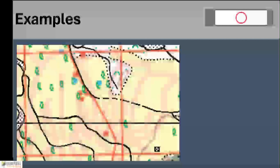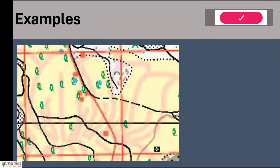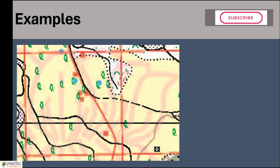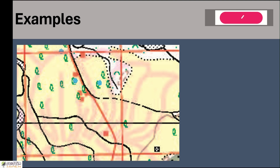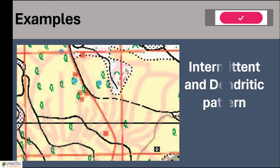Here is another example. If you take the full grid square on the left side, there are two different drainage patterns. The stream flowing towards the northeast is flowing for a few kilometers, then disappearing and reappearing — that is an intermittent stream. When you look at the southwestern corner of the map, there is a tree-like branching formation. So there are two patterns here: intermittent in the northeast and dendritic pattern in the southwest.